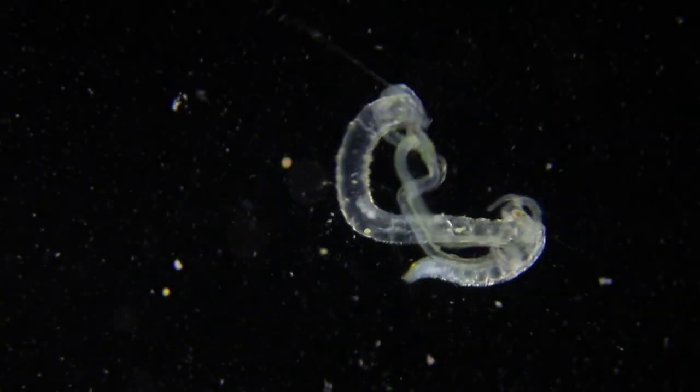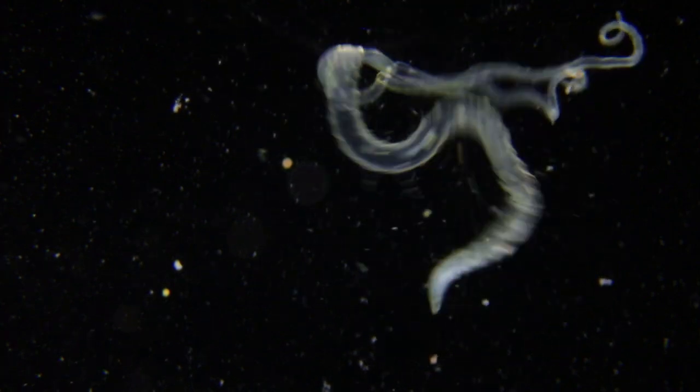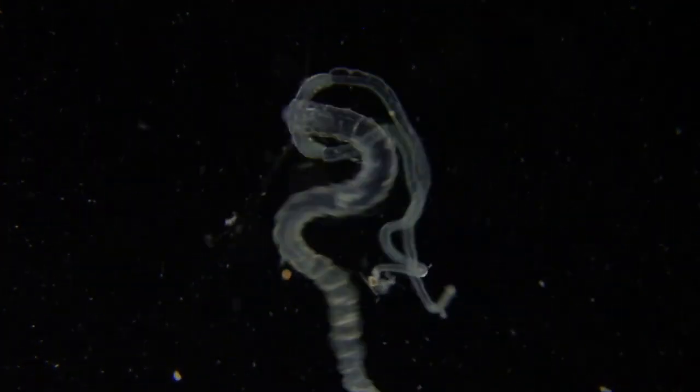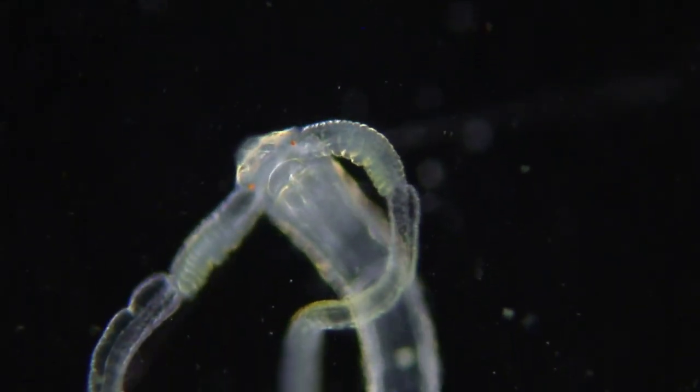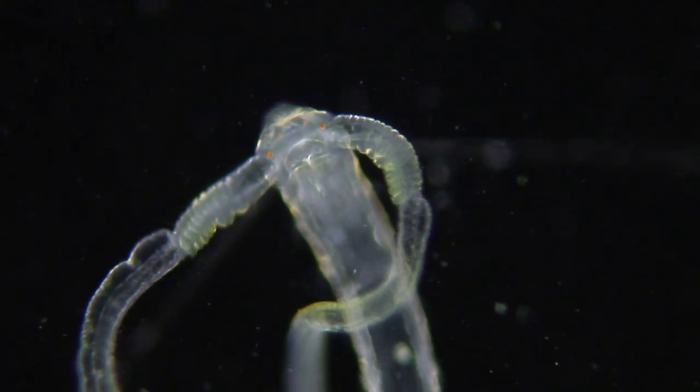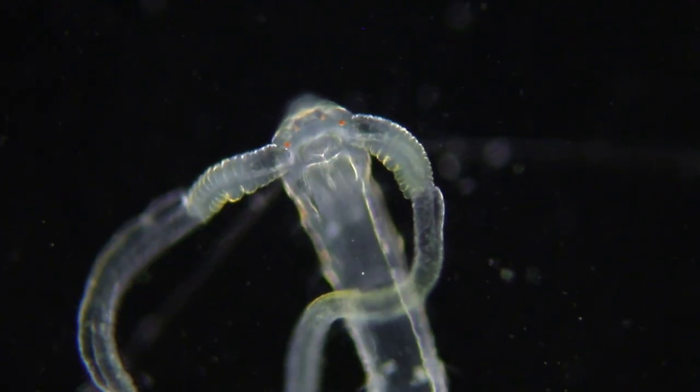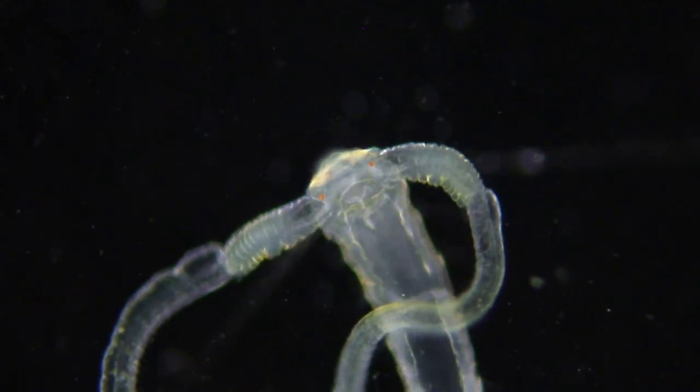One last polychaete worm, this one from the Magelonidae family. It has long feeding tentacles, also called palps. And there is its proboscis.